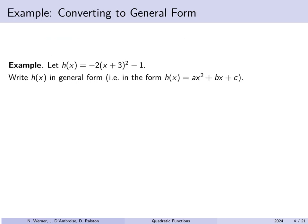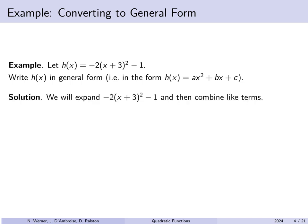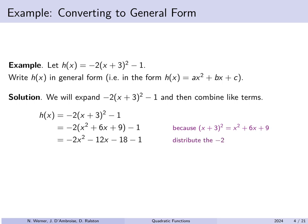Our first example: let h(x) be negative 2 times (x + 3) squared minus 1, and we want to get this in general form. We expand everything out. First, (x + 3) squared gives x² + 6x + 9. Distributing the negative 2 gives −2x² − 12x − 18, and combining the constant terms −18 and −1 gives −19. So the general form is −2x² − 12x − 19.